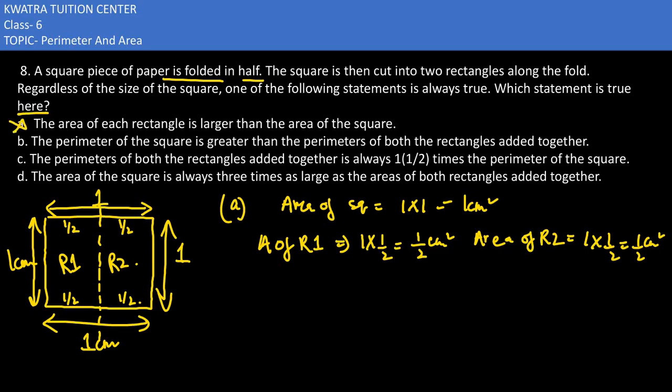In the B part, the perimeter of square is greater than the perimeter of both the rectangles added together. So first of all, what do we have to do? You will find the perimeter of square.